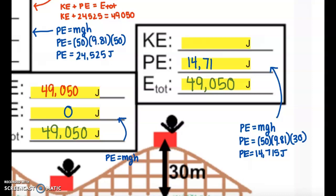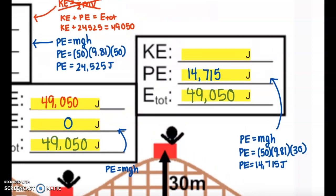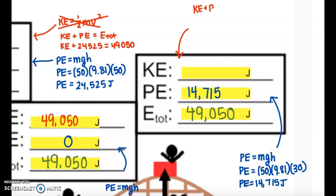I can use this information to then help me find my kinetic energy. I know that kinetic energy plus potential energy needs to equal my total energy. I'm looking for kinetic energy. I just found potential energy, and I already know my total energy from conservation of energy. Solving this out, I get 34,335 joules of kinetic energy on this last hill.